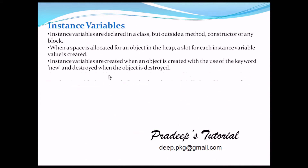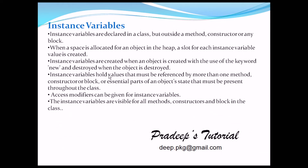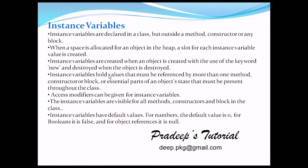When we destroy the object, the instance variables go away too. Instance variables hold values that must be referenced by more than one method, constructor, or block — they are essential parts of an object's state that must be present throughout the class. Access modifiers can be given for instance variables. Instance variables are visible for all methods, constructors, and blocks in the class. Default values: for numbers it is 0, for boolean it is false, and for object references it is null.